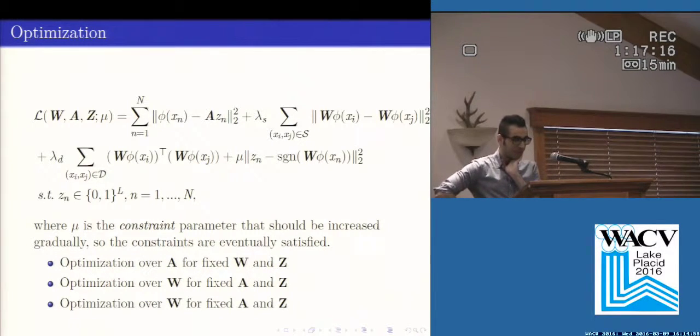We fix some parameters and optimize over other parameters. However, since the nonlinear function is potentially infinite dimensional, we prove two theorems to show that by applying kernel trick, we can make this optimization tractable.